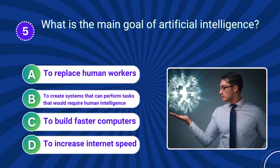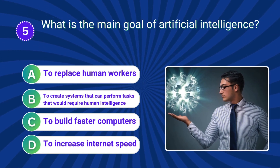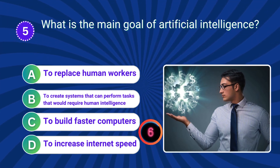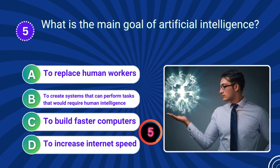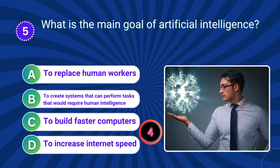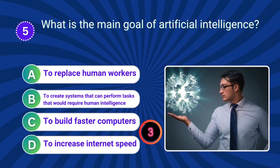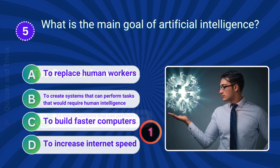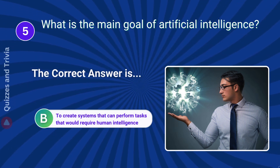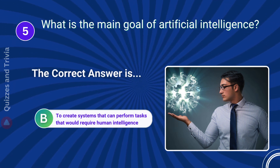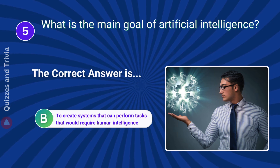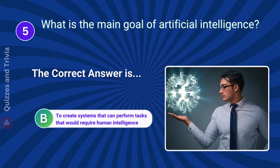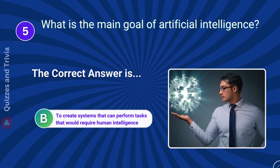What is the main goal of artificial intelligence? Answer B: To create systems that can perform tasks that would require human intelligence.